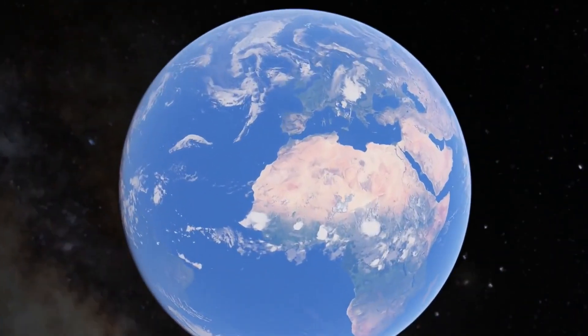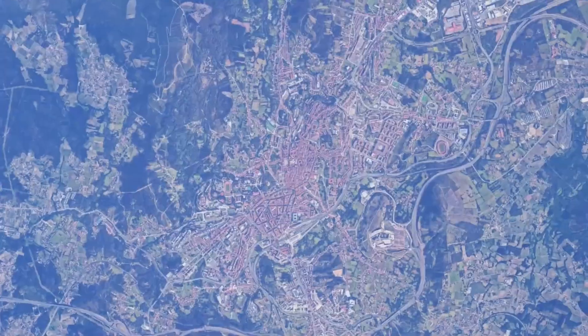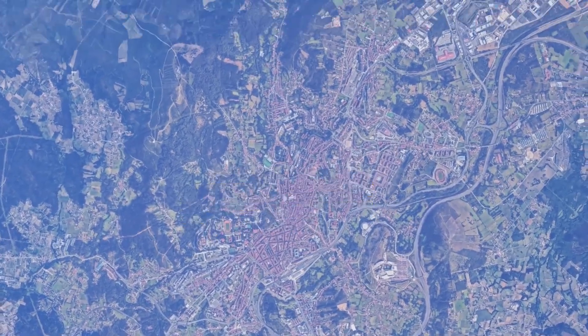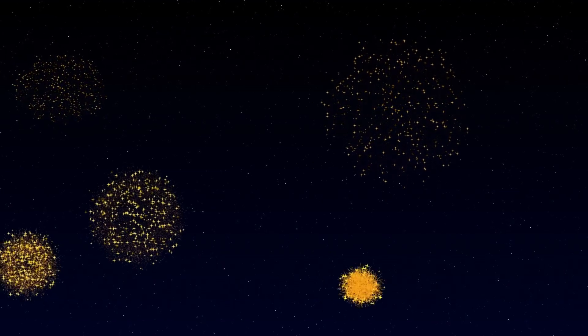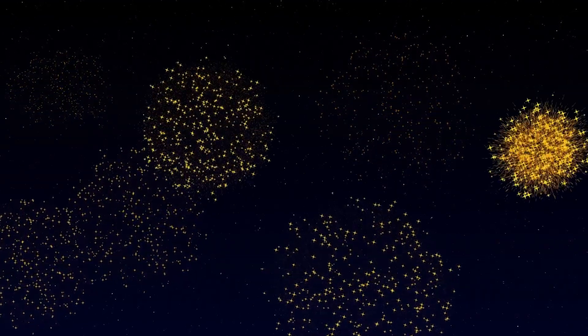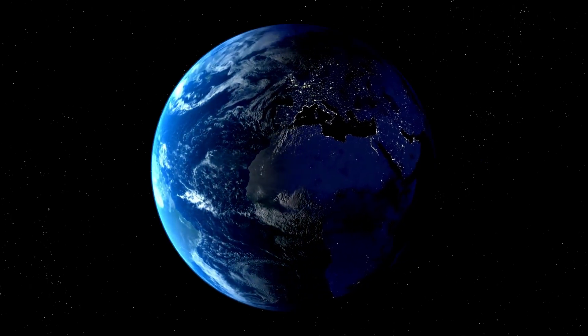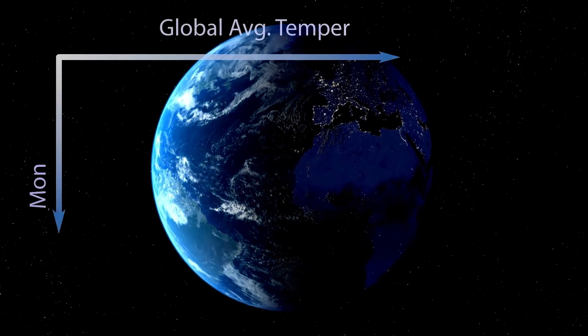Another promising technology is the starshade, a giant flower-shaped spacecraft that flies in formation with the telescope. Positioned tens of thousands of kilometers away, the starshade blocks the starlight before it even enters the telescope, allowing only the light from the exoplanets to reach their instruments. This method could be particularly effective in observing planets in the habitable zone of their stars, where liquid water and potentially life might exist.